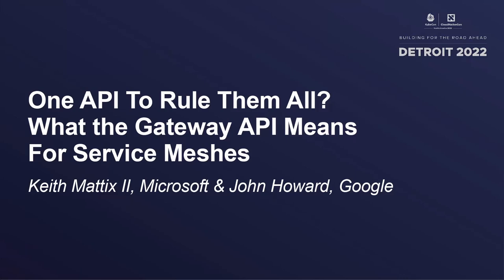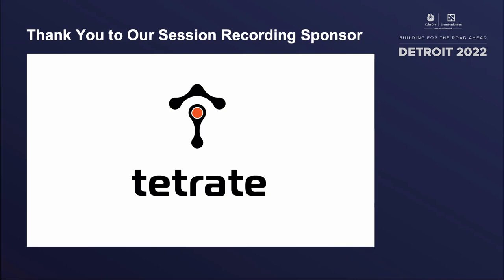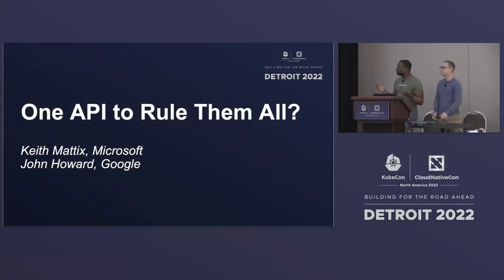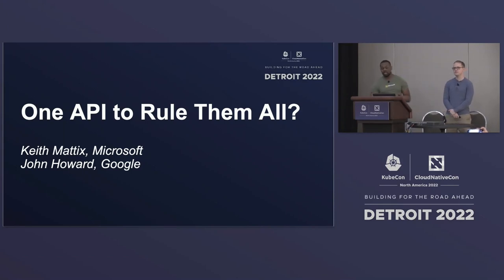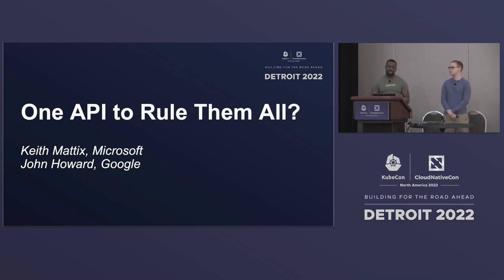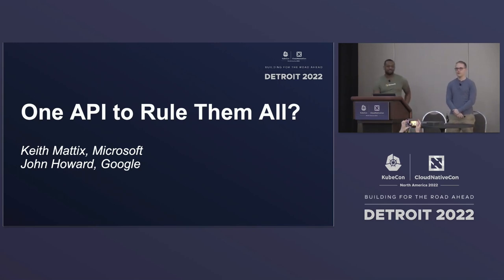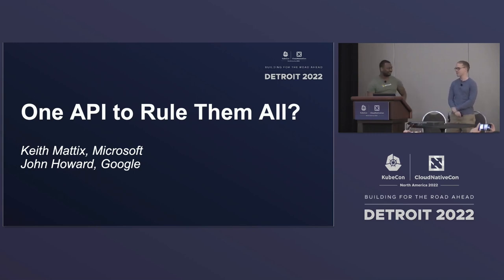We're going to go ahead and get started. Thank you all for coming on a Friday. Really appreciate everyone coming out for our talk. The title of our talk is 'One API to Rule Them All.' I'm Keith Maddox, a Senior Engineering Lead for the Open Service Mesh Project at Microsoft, and also a co-lead of the Gamma Initiative. I'm John Howard, a Software Engineer at Google working on the Istio Project, and also a co-lead on the Gamma Project.